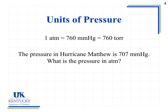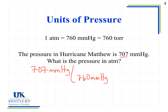Let's look at an example. The pressure in Hurricane Matthew is 707 millimeters of mercury. What is the pressure in atmospheres? Just like any other conversion, we start with the given number: 707 millimeters of mercury. To cancel millimeters of mercury, place it on the bottom of the conversion factor — 760 millimeters of mercury equals 1 ATM. The millimeters of mercury cancel, and 707 divided by 760 gives 0.930 atmospheres.